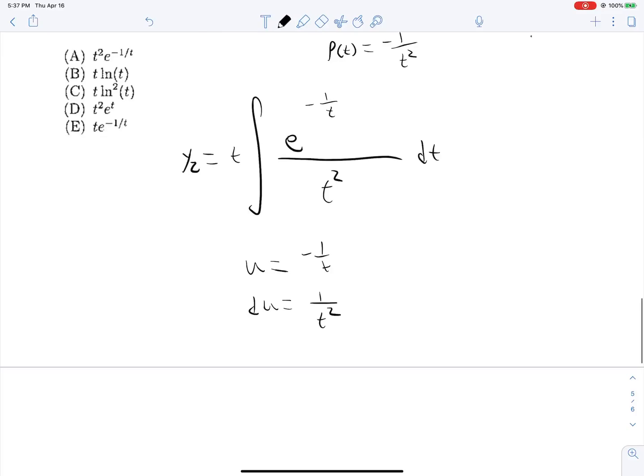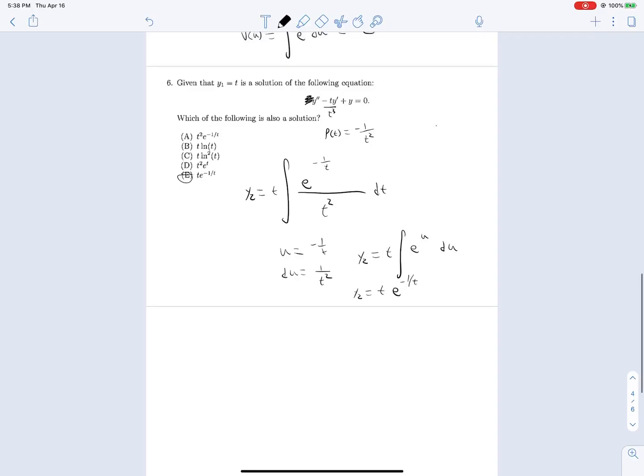Well, actually, the sign is slightly different, but we'll get the same result, we'll get e. But doing this u substitution, y2 is equal to t times e to the u, all divided by nothing, because we'll divide that guy out, du, so we get y2 is equal to t times e to the u, e to the negative 1 over, not u, negative 1 over t. And there's our answer right there.